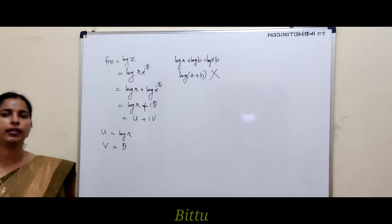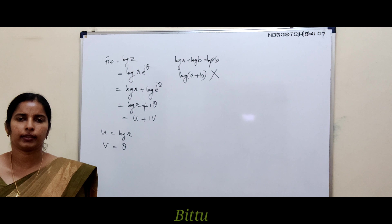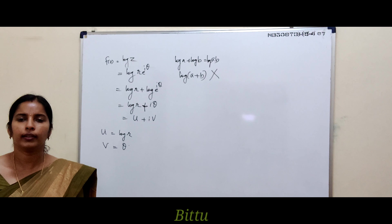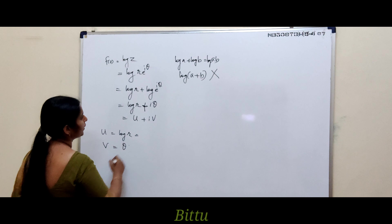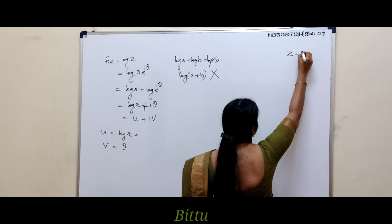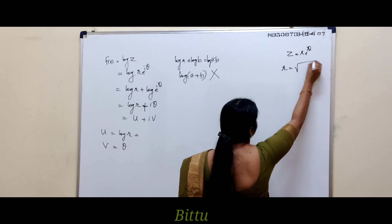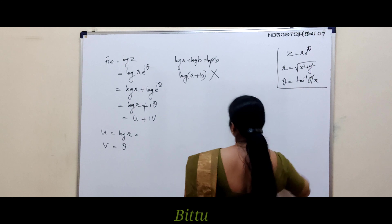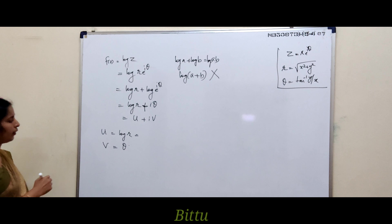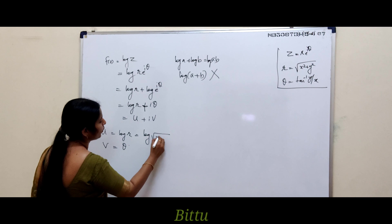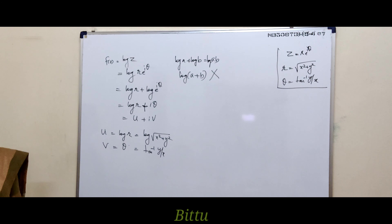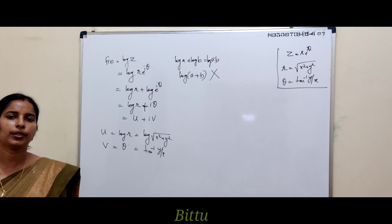To find the partial derivatives ∂u/∂x, ∂u/∂y, etc., we must express u and v in terms of x and y. Here R = √(x² + y²) and θ = tan⁻¹(y/x). So u = log√(x² + y²) and v = tan⁻¹(y/x).